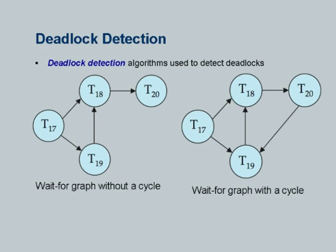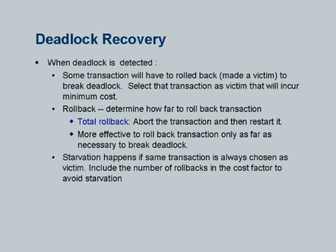How do you detect deadlocks? The usual way is to construct a waits-for graph. If a transaction is waiting for another to release a resource before it can proceed, you form a graph and detect cycles. How do you recover from deadlocks? You can roll back totally or roll back partially up to the point where you release a lock that somebody else needs, then they can proceed and you can restart. There are tricks to make sure every transaction will eventually commit instead of becoming a victim too many times.